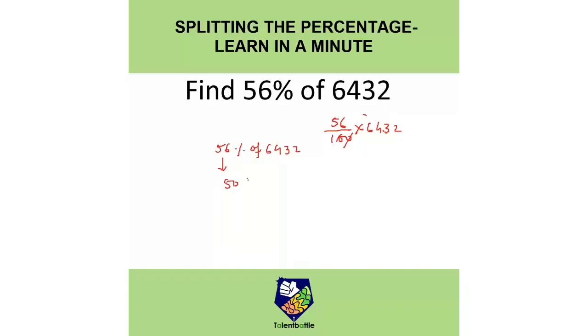56% I will split as 50%, 5% and 1%. 50% of 6432 will be half, that is 3216. If 50% is 3216, then 5% is going to be 321.6.